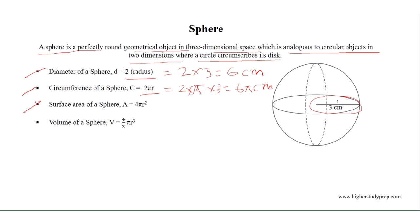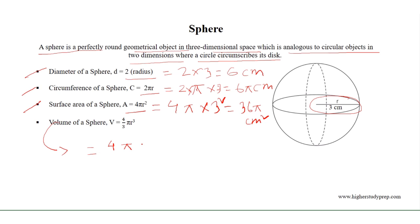The surface area of the sphere, where r equals 3, equals 4π times 3², which results in 36π square centimeters. And the volume of the sphere results in 36π cubic centimeters, where π is approximately equal to 3.1416.